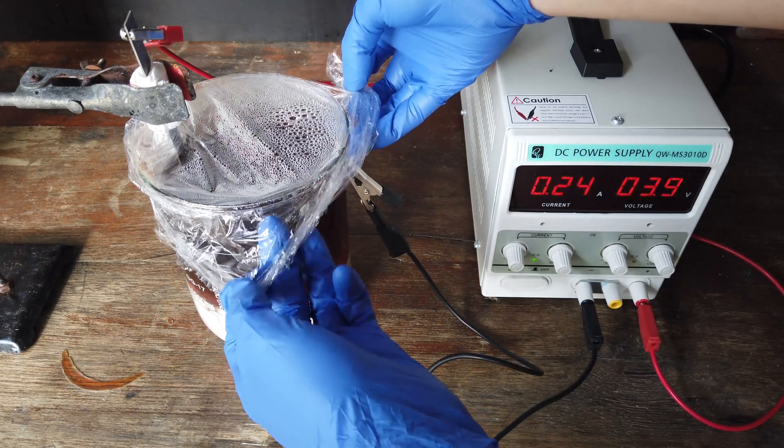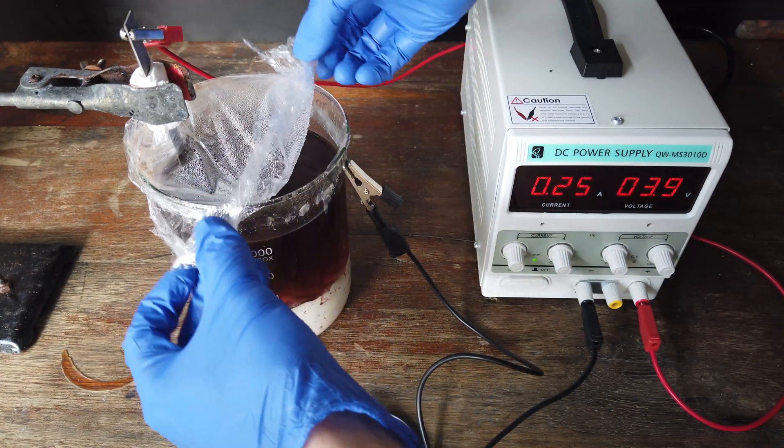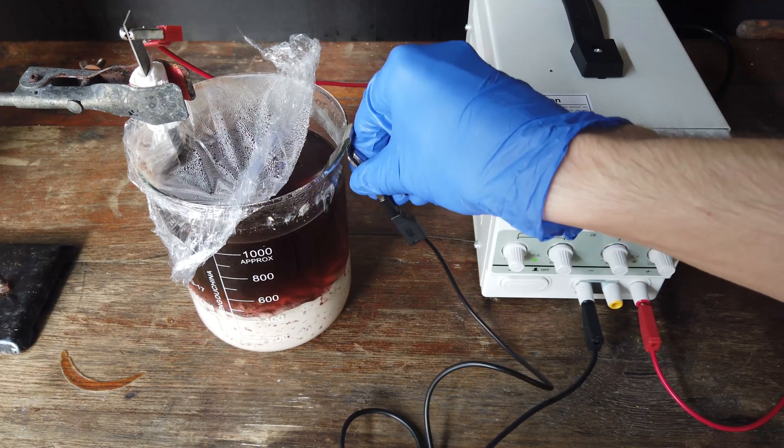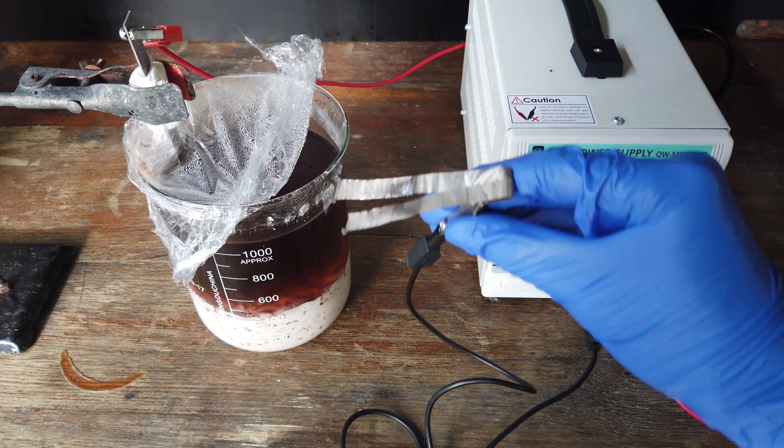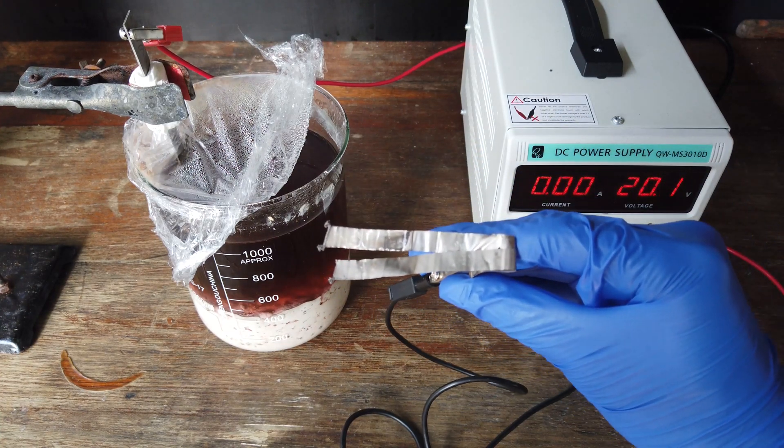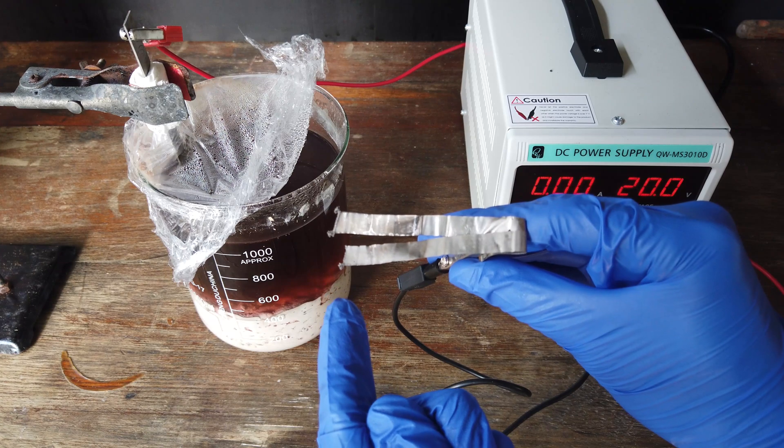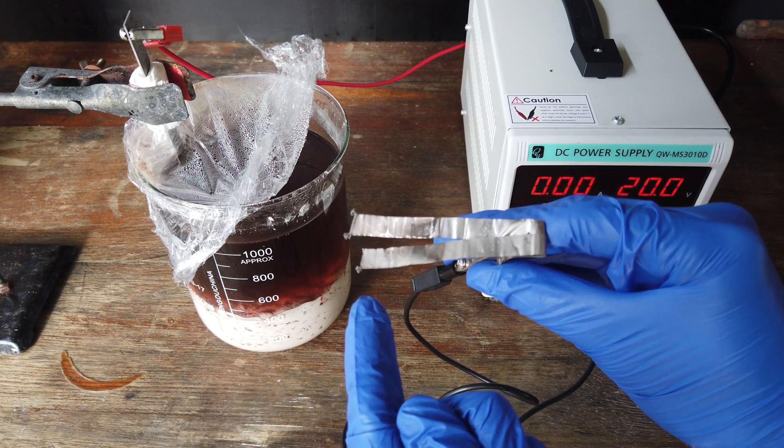Now that the cell's been running for 12 hours or so, let's get a look at the cathode. As you might note, not much has really happened. But we can see the formation of a small amount of metal on the corners of the nickel strips. That's a very promising sign.